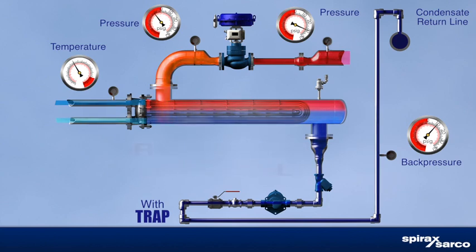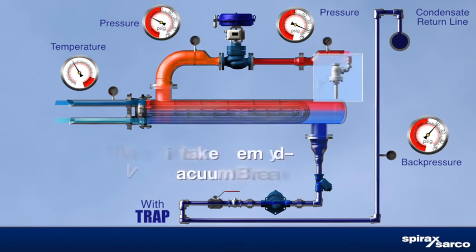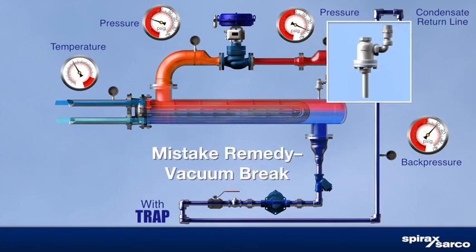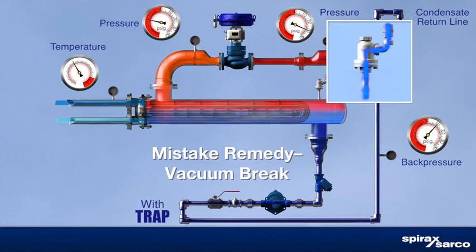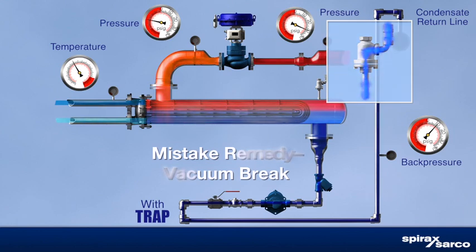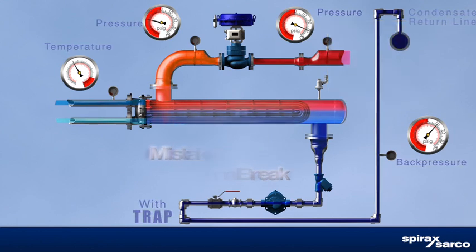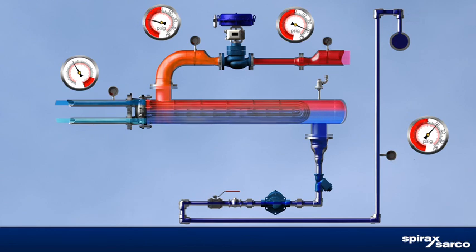Some operators address vacuum in the steam space by installing a vacuum breaker on the shell. This practice introduces atmospheric gases that dissolve readily into the cooler condensate. These dissolved gases form corrosives that attack wetted surfaces while doing nothing to eliminate the stall condition.